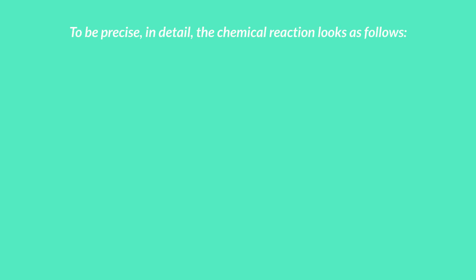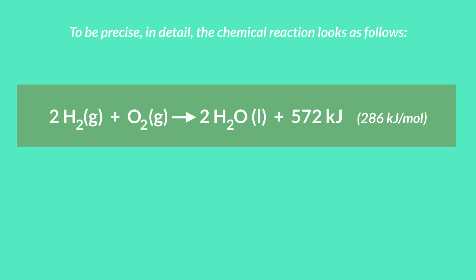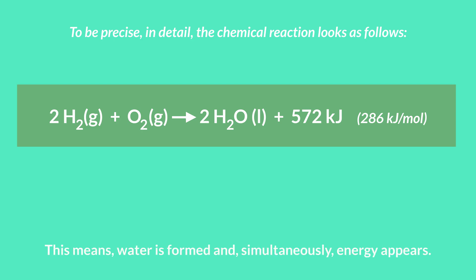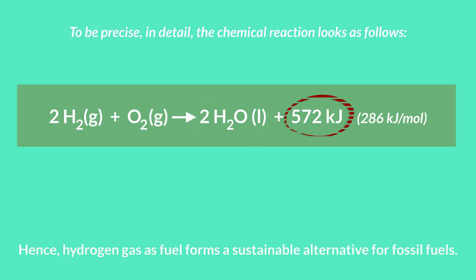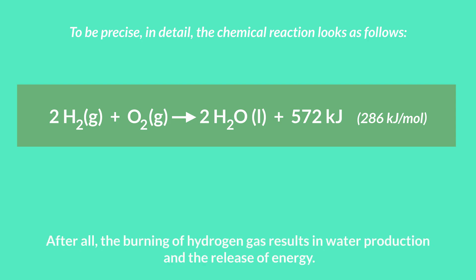To be precise, in detail the chemical reaction looks as follows. This means water is formed and simultaneously energy appears. Hence, hydrogen gas as fuel forms a sustainable alternative for fossil fuels, as the burning of hydrogen gas results in water production and the release of energy.